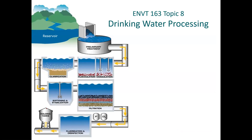Drinking water is going to people's taps and by definition they're drinking it, so we have certain health standards to consider. Usually we're taking from a natural water source like a river or lake. Around Fort McMurray, we take water from the Athabasca — the biggest contamination concern is silt adding to turbidity. Wastewater treatment on the other hand deals with fecal matter, kitchen waste, and shower runoff. It's more polluted, but we don't necessarily drink it on the other end — though we do clean it to a quality that can legally be discharged back into the river.